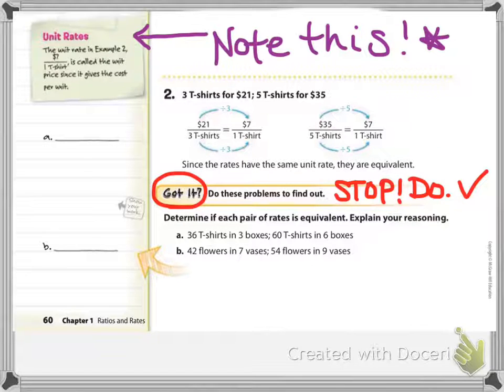You have 3 t-shirts for $21, 5 t-shirts for $35. You're trying to see if these are equivalent rates. So let's try taking them down to the unit rate.